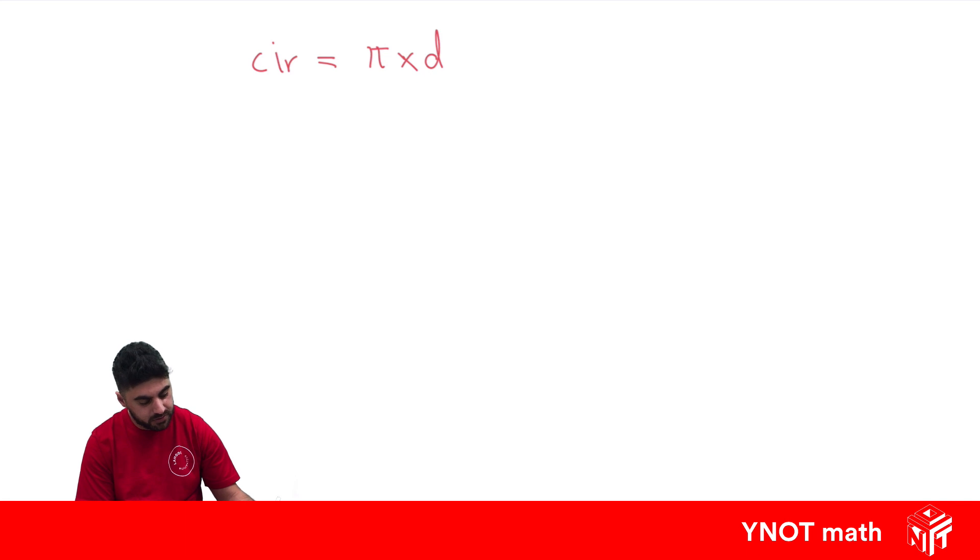So let's find the circumference of a circle. So if we know the diameter of a circle is 8 meters, what's its circumference?